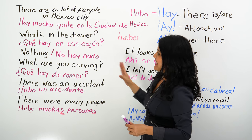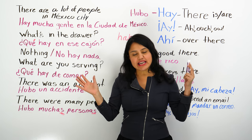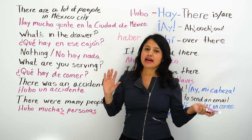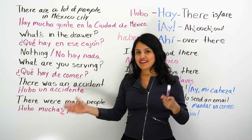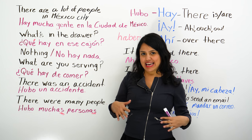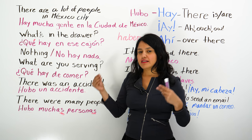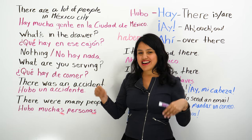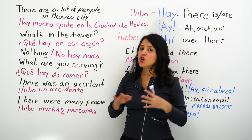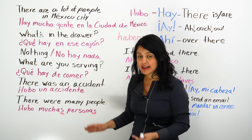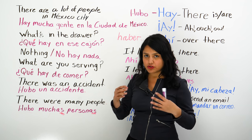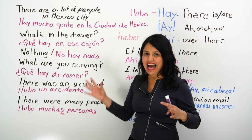So, to summarize: 'there is' and 'there are' → hay; 'there was' and 'there were' → hubo. It's equivalent to 'there is' — hay.